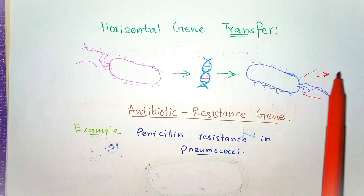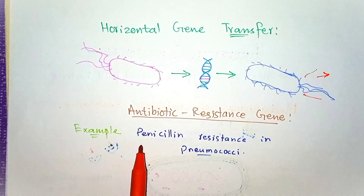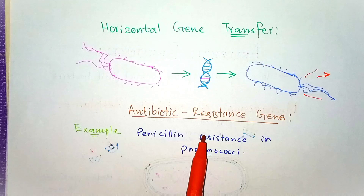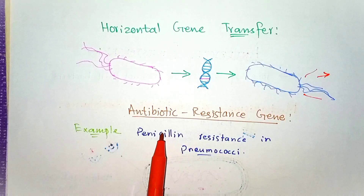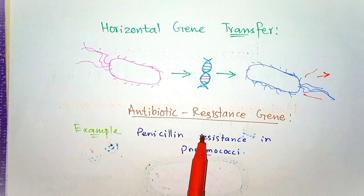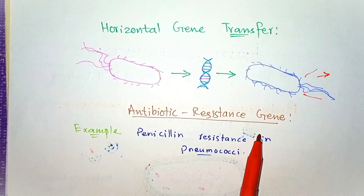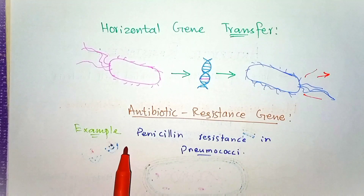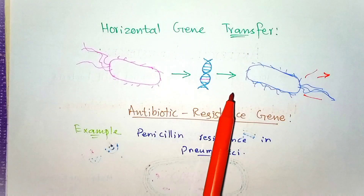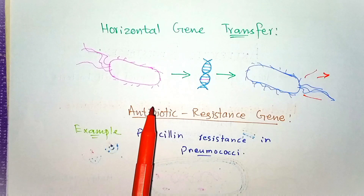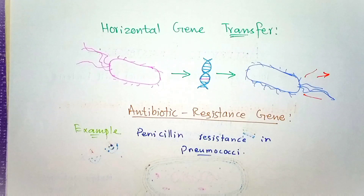One example is penicillin resistance. The basis of penicillin resistance in pneumococci is that resistant pneumococci produce different penicillin-binding proteins. These different penicillin-binding proteins exhibit relatively low affinity for penicillin compared to wild-type pneumococci. This is an example of horizontal gene transfer, by which resistance can be transferred from one bacterium to another. That covers antibiotic resistance — thank you very much.